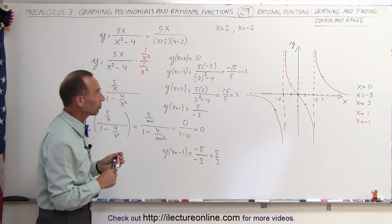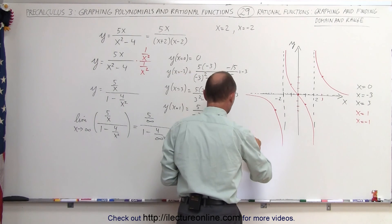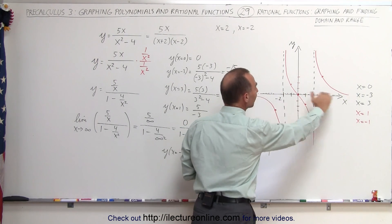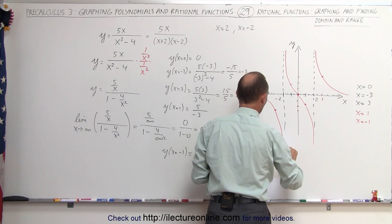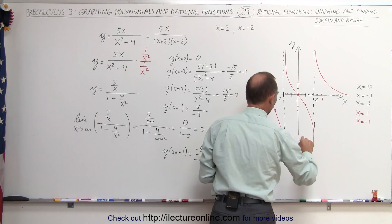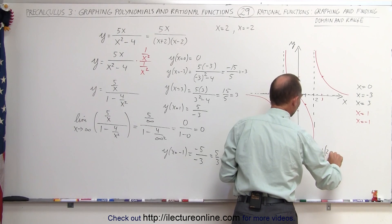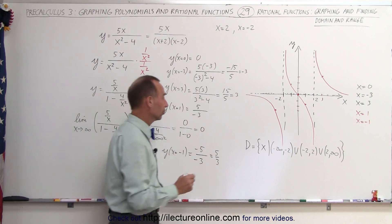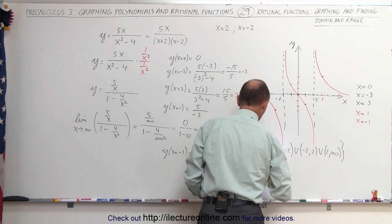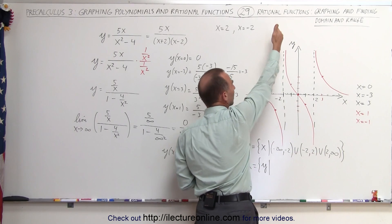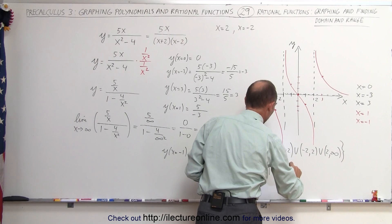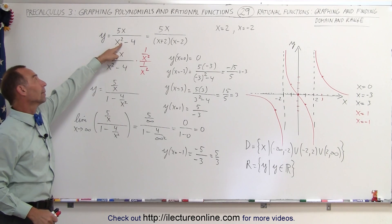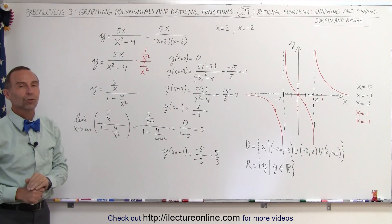So that's what the graph looks like for that particular rational function. To find the domain and the range: the domain is all values for x such that x cannot be -2 and x cannot be 2, but can be every other value. Therefore the domain is from negative infinity to -2, union from -2 to 2, union from 2 to positive infinity. For the range, y can go to positive infinity and negative infinity, so y is simply an element of all the real numbers. And that's the domain and the range — that's how we solve a problem like this when the exponent in the denominator is larger than the exponent in the numerator.